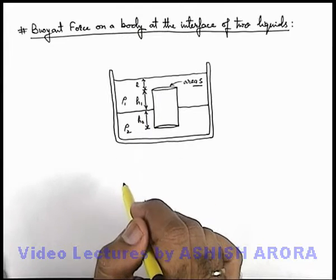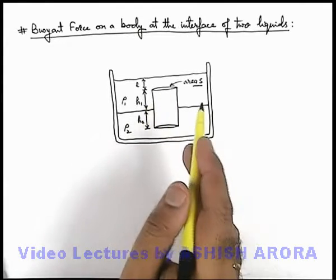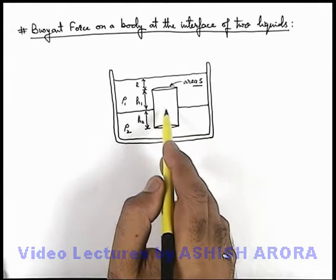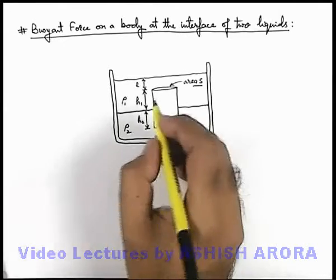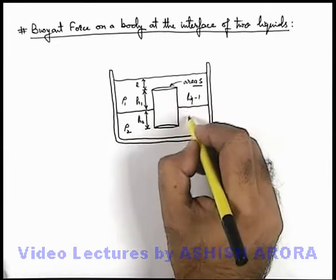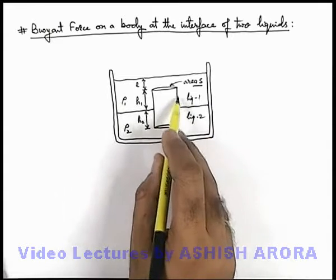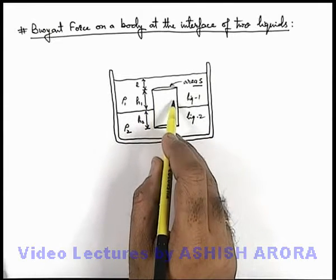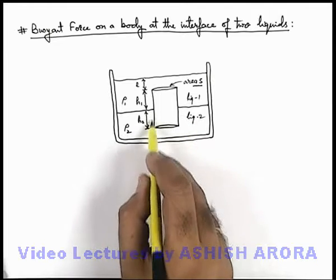Here if we just talk about the buoyant force acting on the body, we can directly calculate it by calculating the weight of liquid displaced. In this situation, say if this is liquid 1 and this is liquid 2, for liquid 1 it is displacing a volume h₁S, and for liquid 2 it is displacing a volume h₂S.